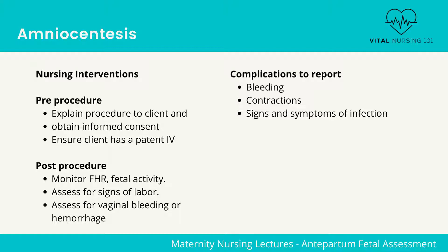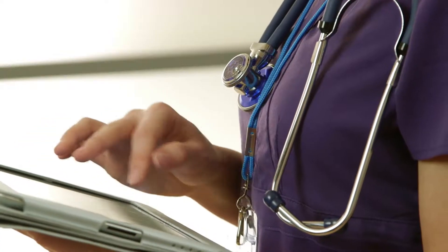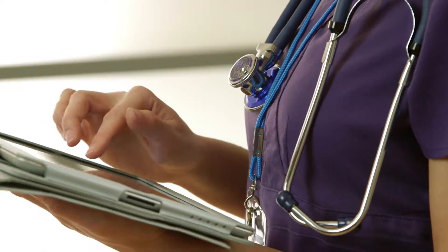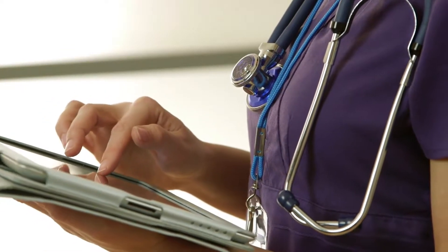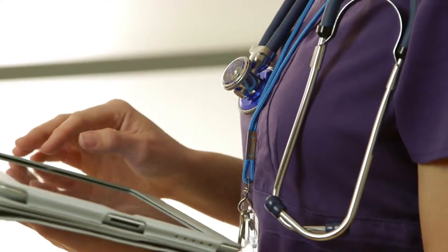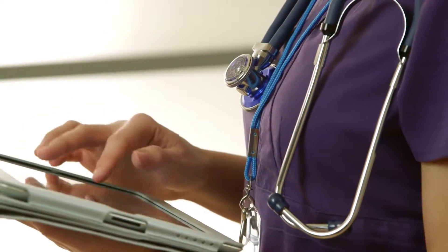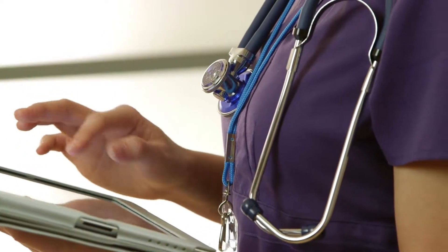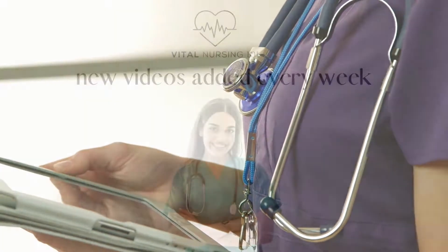Post-procedure: monitor fetal heart rate and fetal activity, assess for signs of labor, and assess for vaginal bleeding or hemorrhage. Administer Rhogam if the client is Rh negative. Teach the patient to report the following: bleeding, contractions, and signs and symptoms of infection.